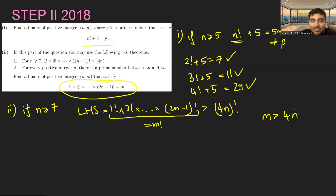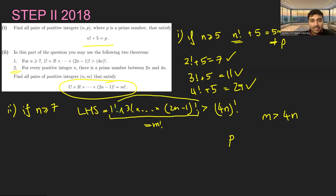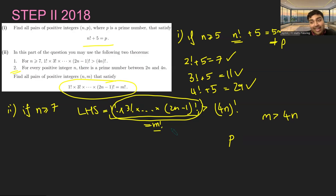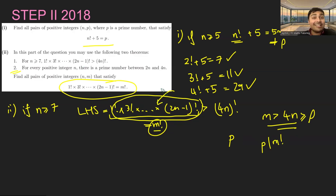But there's an issue: by Theorem 2, there's some prime number p between 2n and 4n. This cannot possibly equal m factorial, because the product on the left hand side is made up of factorials of numbers less than 2n, so none of those terms can be a multiple of p — since p is a prime bigger than 2n. But m is bigger than 4n, so m is bigger than p, meaning p divides m factorial. So p divides the right side but not the left, and so they can't be equal.